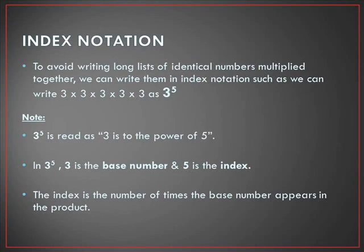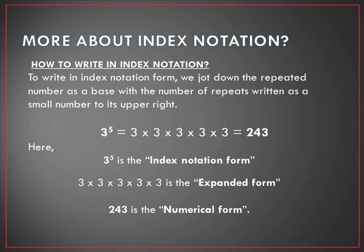Let's start with the first topic: index notation. Index notations are used when we have long lists of identical numbers multiplied together, to avoid writing the long list. We can write them in index notation form, such as 3 × 3 × 3 × 3 × 3 as 3 to the power 5, where 3 is the base number and 5 is the index. The index is the number of times the base number appears in the product.